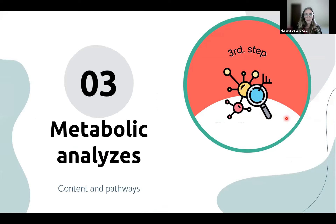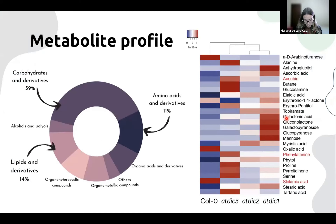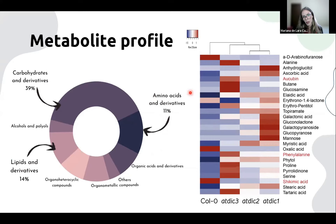The next level of understanding was to perform metabolic analysis. We determined the metabolic profile for the mutant lines, and this global analysis allowed us to identify a wide range of molecules, most representatively carbohydrates, amino acids, and lipids. Among the total compounds identified in the metabolite profiling, the most representative are shown on a heat map, where the highest concentrations are represented in red and the lowest in blue.